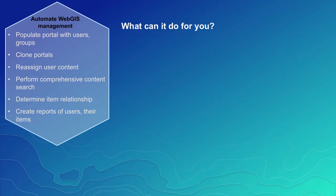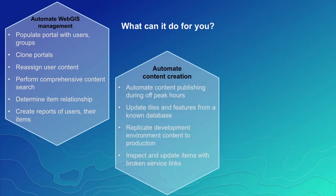ArcGIS content publishers can automate a lot of the data creation process. They can schedule file or feature update processes during non-peak usage times so servers are not maxed out, and the next day analysts have updated layers. They can replicate development environments from one location to another. If a user says a web app is broken, you can inspect the layers in that web map, find out why it's broken, republish the service, or write a query to find all broken web maps and fix them.